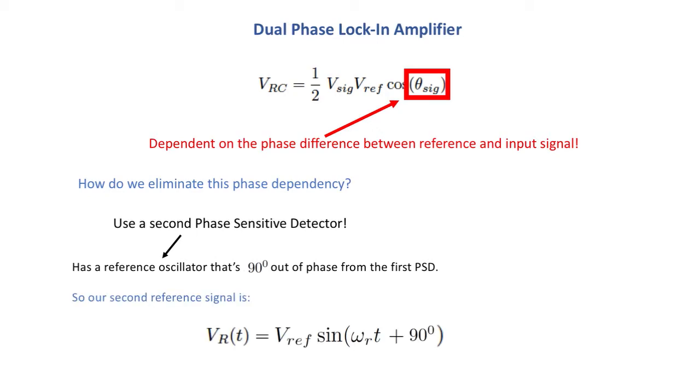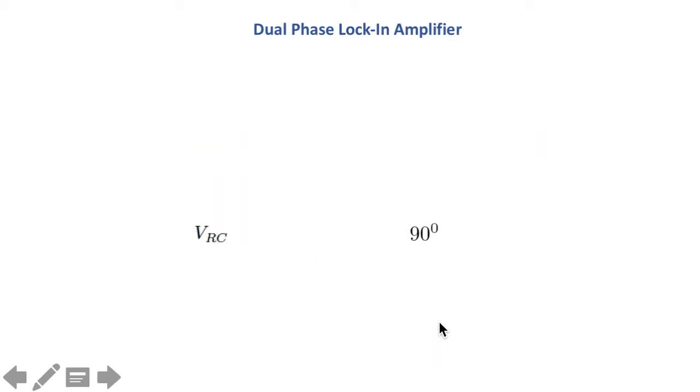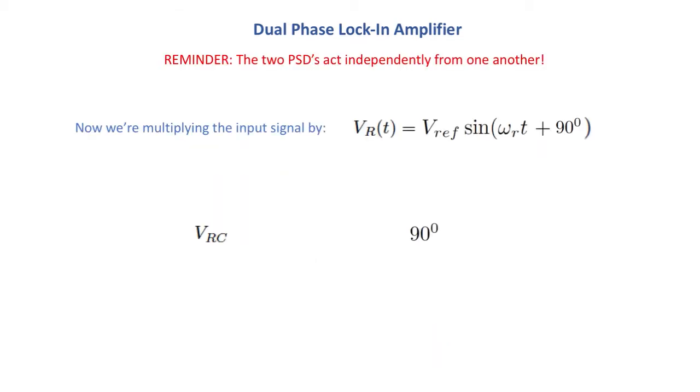That means that we have a second reference signal of VRT equals the amplitude times sin(ωRt + 90 degrees). So what happens and a good reminder is that the two phase sensitive detectors act independently from one another. So the first phase sensitive detector does all of its multiplication and math and the second one does it independently.